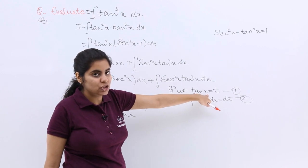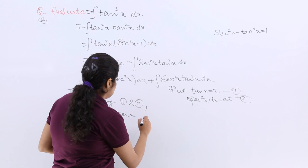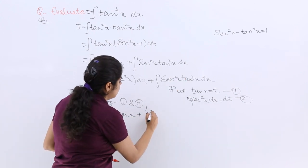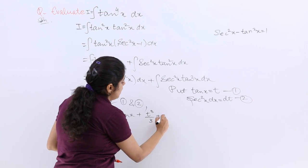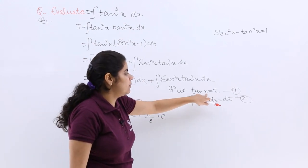See tan square x means integration of t square. Secant square x dx is dt. So plus integration t square dt means t cube by 3 plus c or I can also replace t by tan x.